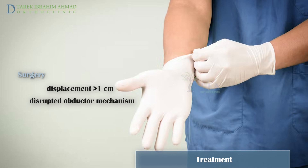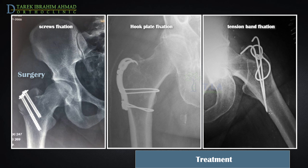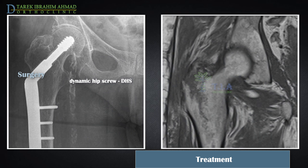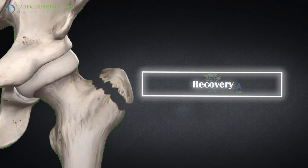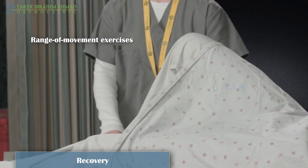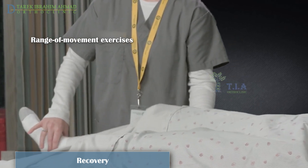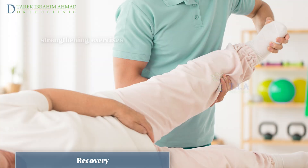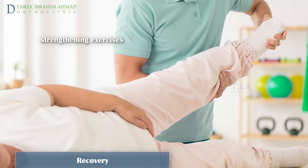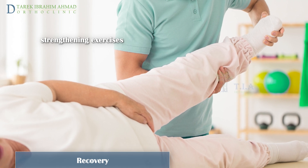Greater trochanter fracture can be repaired by open reduction and internal fixation with screws, plate, or tension band, depending on the size of the avulsed fragment. Surgical treatment with dynamic hip screw (DHS) is applied to all patients with intertrochanteric extension after magnetic resonance examination. Post-surgical recovery range-of-movement exercises should start in the immediate post-operative period to prevent stiffness. Abductor strengthening exercises can be started after six to eight weeks if there are clinical and radiological signs of healing.